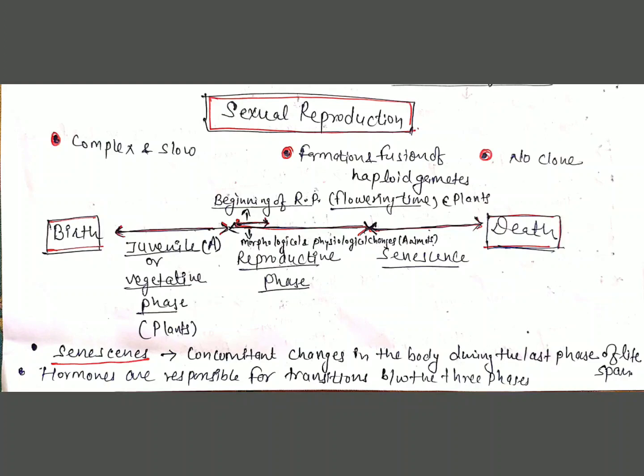Between birth and death, an organism goes through different phases. The first is the juvenile phase or vegetative phase: all organisms have to reach a certain stage of growth and maturity before they can reproduce sexually. This period of growth is known as the juvenile phase in animals and the vegetative phase in plants. The second phase is the reproductive phase, which can be seen easily in higher plants when they come to flower.